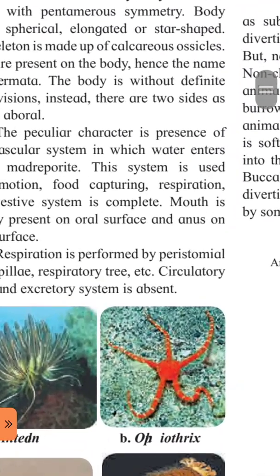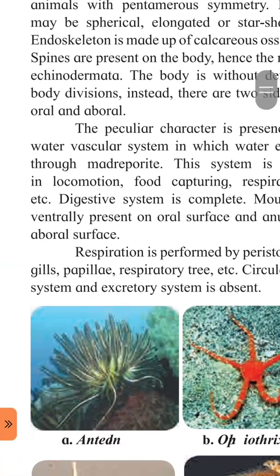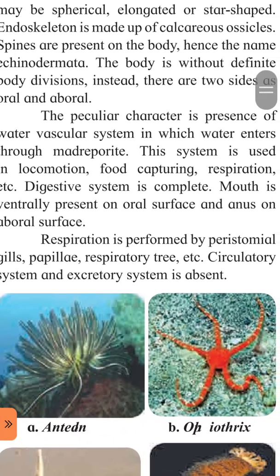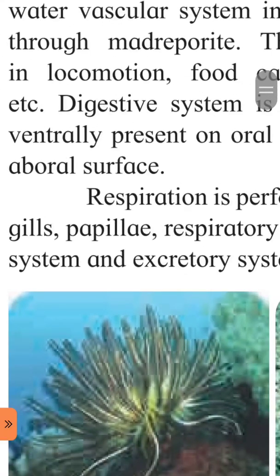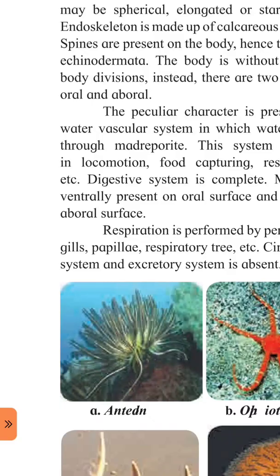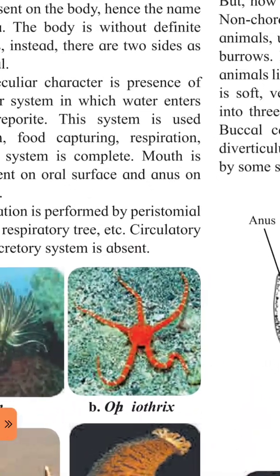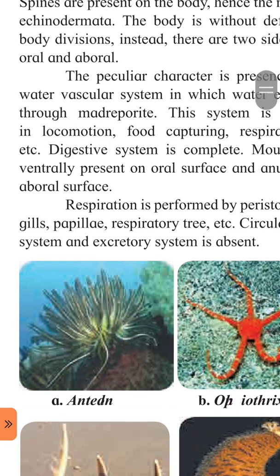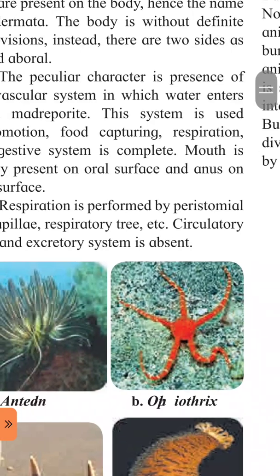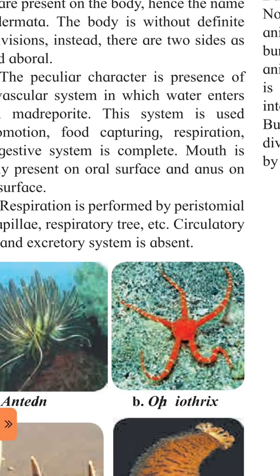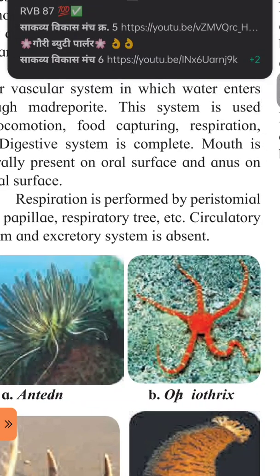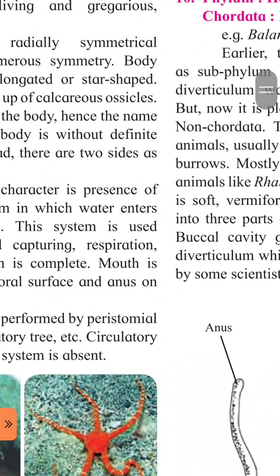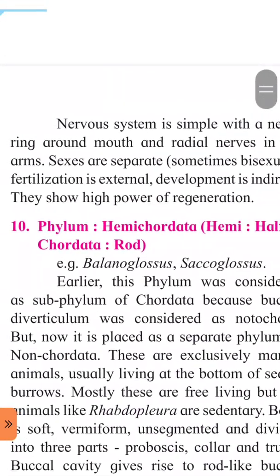Respiration is performed by peristomial gills — exchange of gases gill se karte hain, kyunki ye jeev water mein rehte hain, so respiration takes place with the help of gills, papillae, and respiratory tree. Circulatory system and excretory system is absent — in jeevon mein circulatory system aur excretory system absent hain.